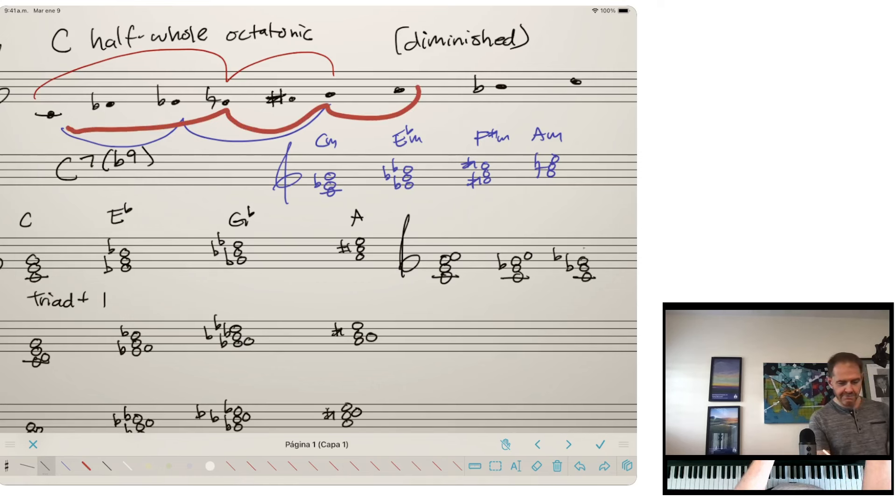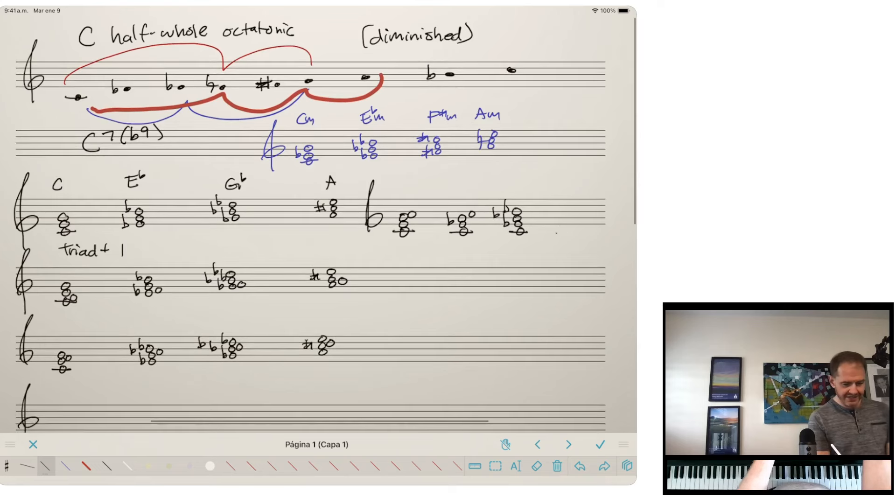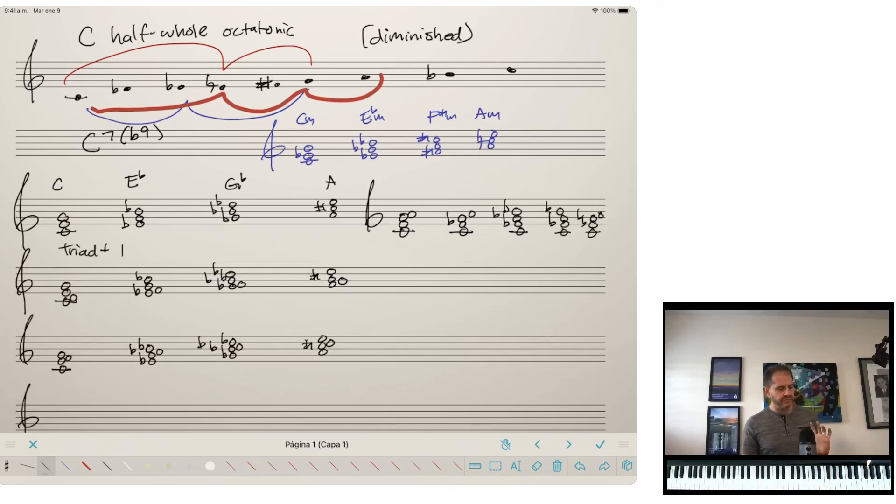You can make a minor seventh chord: C, E flat, G, B flat. It's maybe obvious, but you can make also a fully diminished seventh chord. If you think, if you start thinking about all the different possibilities of chords you can find within this scale, take each of these, multiply them by four, you're getting really a lot of different chords. And Chick really uses that.